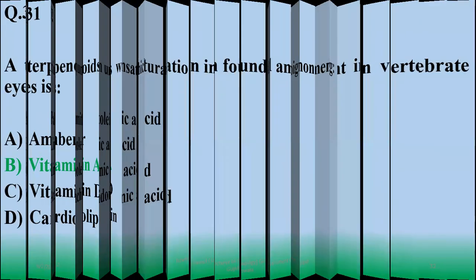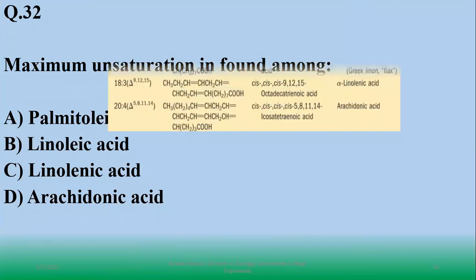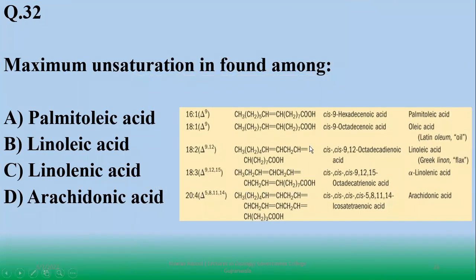Number 32: maximum unsaturation is found among arachidonic acid. If you see palmitoleic acid has 16 carbons with 1 double bond. Oleic acid has 18 carbons with 1 double bond. Linoleic acid has 18 carbons with 2 double bonds. Linolenic acid has 18 carbons with 3 double bonds. Arachidonic acid has 20 carbons with 4 double bonds at positions 5, 8, 11, and 14. So right option is D.